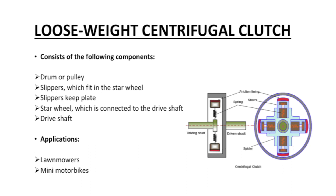Loose weight centrifugal clutch components: a drum or pulley; a slipper, which is fitted to the star wheel — slippers are also called shoes or shoe keeper plates; a star wheel, which is connected to the drive shaft; and the drive shaft. Applications: found on lawn mowers and mini motorbikes.